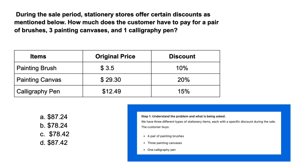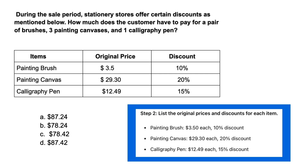To solve this, we first need to understand the problem. We have three different types of stationary items, each with a specific discount during the sale. The customer buys a pair of painting brushes, three painting canvases, and one calligraphy pen. On your teacher certification exam, read the problem and summarize it in your own head. Next, list the original prices and discounts: Painting brush — $3.50, 10% discount. Painting canvas — $29.30 each, 20% discount. Calligraphy pen — $12.49 each, 15% discount.